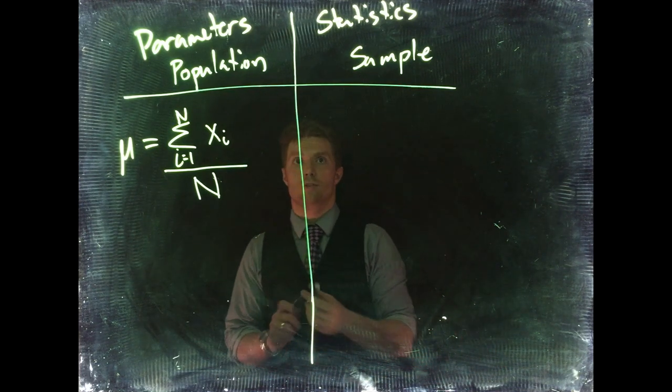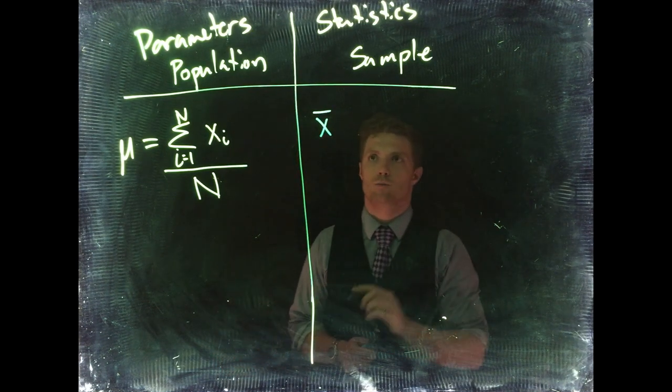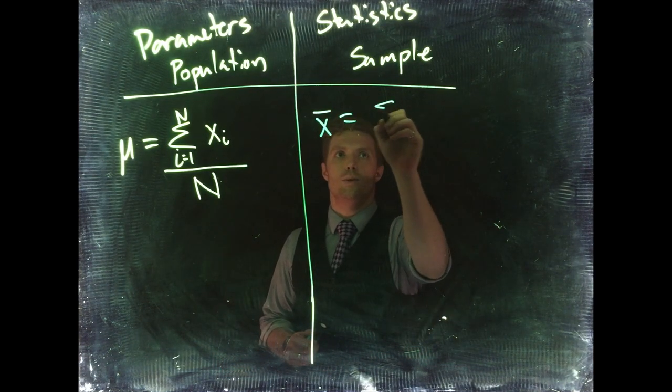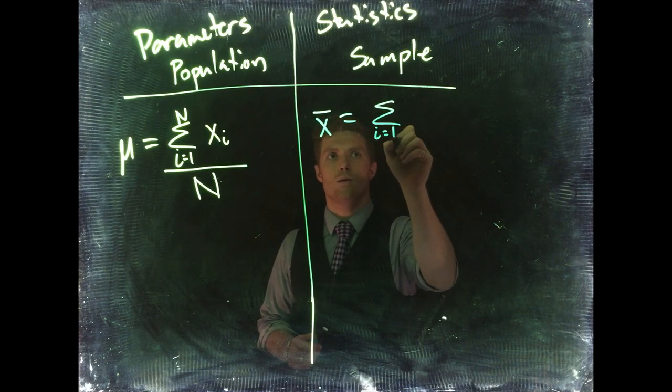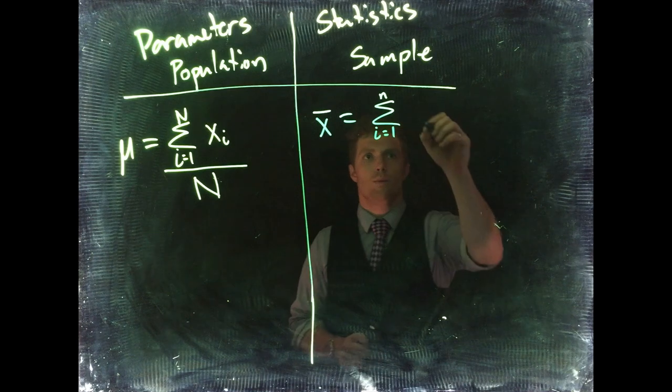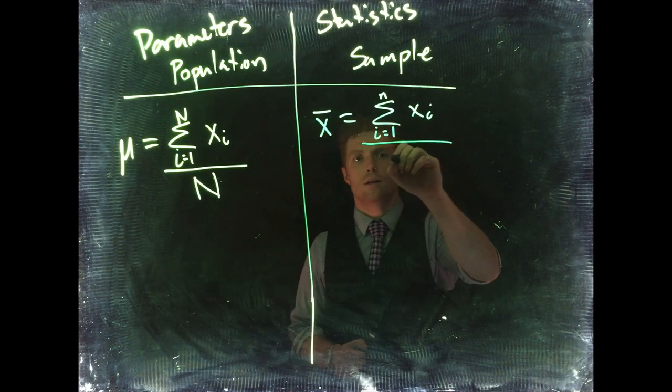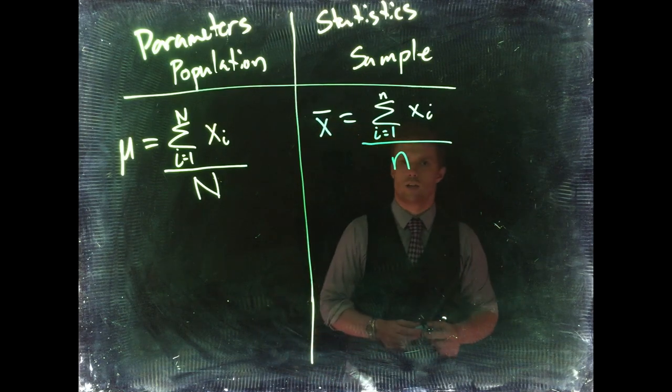From our sample size we talk about means in terms of x bar (x̄). So this equals, once again, the sum still from i equals 1, this time to little n of our sample size, and we still say xi.